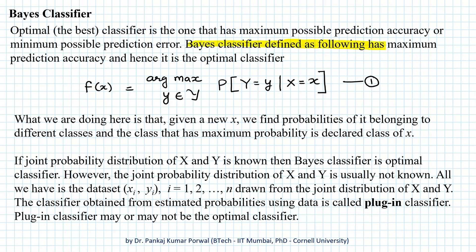The base classifier defined as following has maximum prediction accuracy and hence it is the optimal classifier. The base classifier is defined as f(x) equals argmax with respect to y belonging to the set of all classes, and we are maximizing the probability that Y equals y given X equals x. Given x, we find the probability of it belonging to all the classes, and the class that has maximum probability is declared as the class of x.